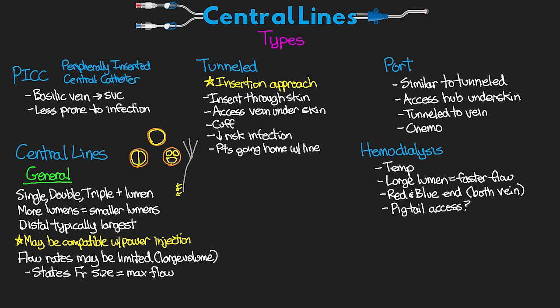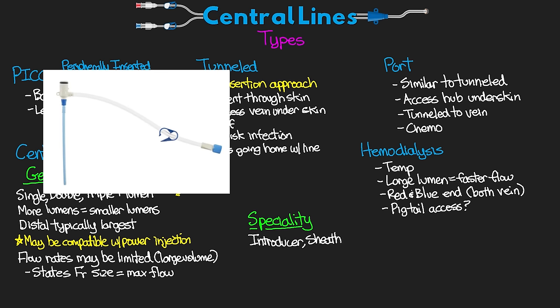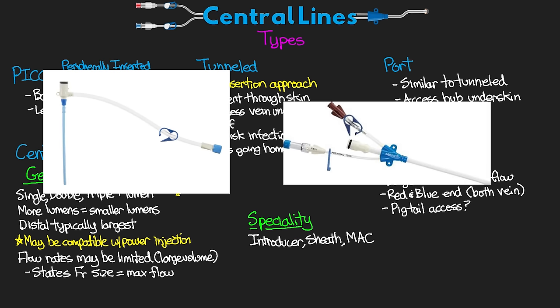This applies to all single, double, triple, and specialty central line catheters. It is important to know that based on the French size of a lumen, how much flow you're going to get — and if you compare that to the flow rates we like to see with a massive transfuser, you'll see it's nowhere near adequate. Our other category of standard central lines is specialty central lines, including introducers, sheaths, and multi-access catheters or MACs. With these catheters we get the benefit of larger lumens allowing for larger flows — especially for large-volume resuscitation — and they can also allow access for transvenous pacers, Swan introductions, and other cardiac devices.